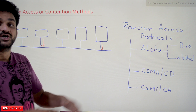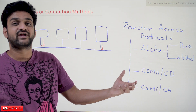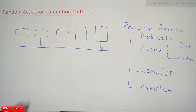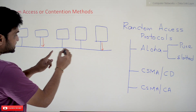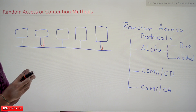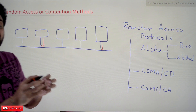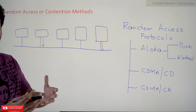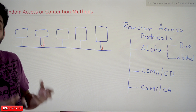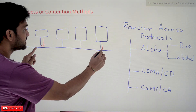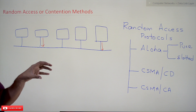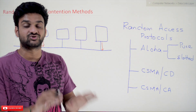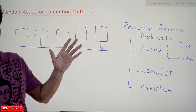The problem with random access is that there will be collisions. For example, if both systems are trying to access the medium at the same point of time, the data being transmitted within the shared medium will get collided — meaning the data within those frames will get destroyed or changed. That is what we call a collision.